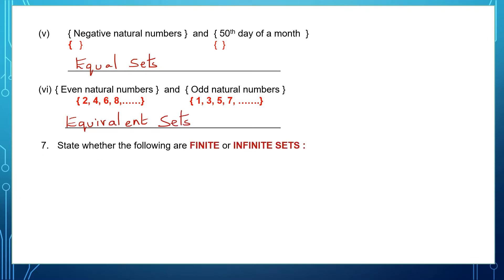Question 7: state whether the following are finite or infinite sets. Finite sets are those sets in which the number of elements can be counted, whereas infinite sets are those where you cannot count because there are a countless number of elements.